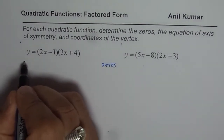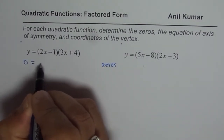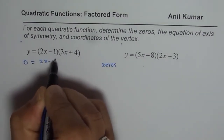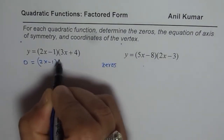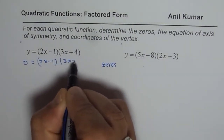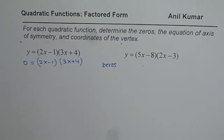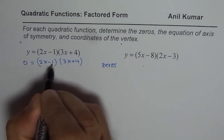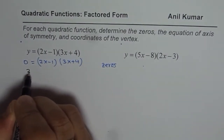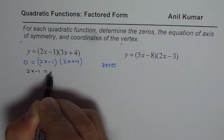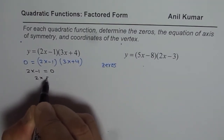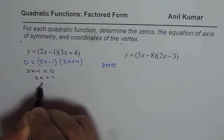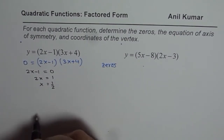So basically, we are solving the equation y equals to 2x minus 1 times 3x plus 4. Once you solve, you can get zeros. So equate each factor to zero. The first factor here is 2x minus 1, so we get 2x minus 1 equal to 0, which gives 2x equals to 1, so x equals to one half. That is the first zero.